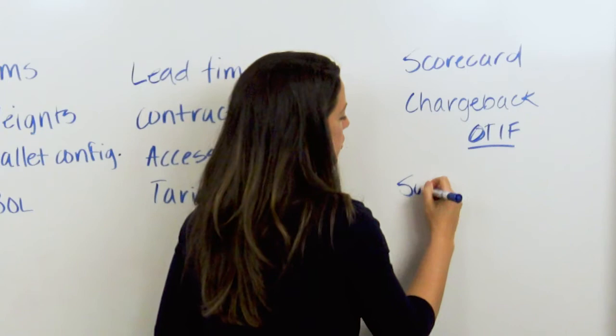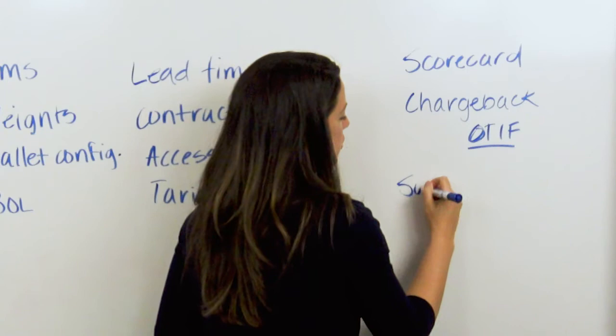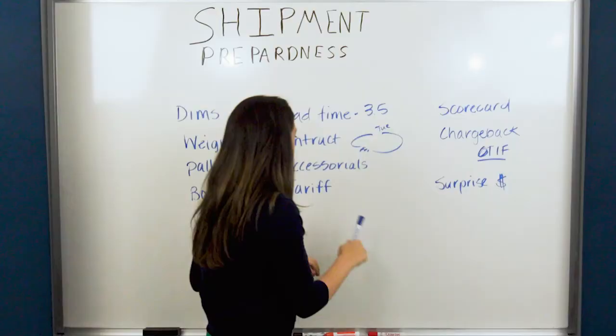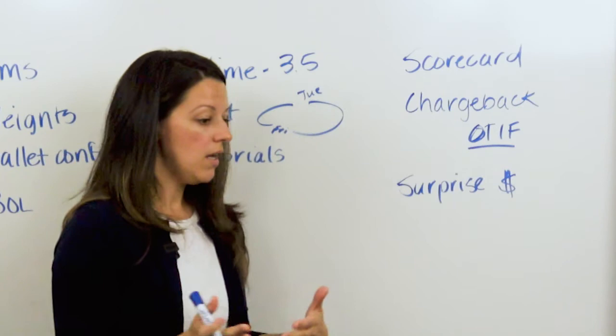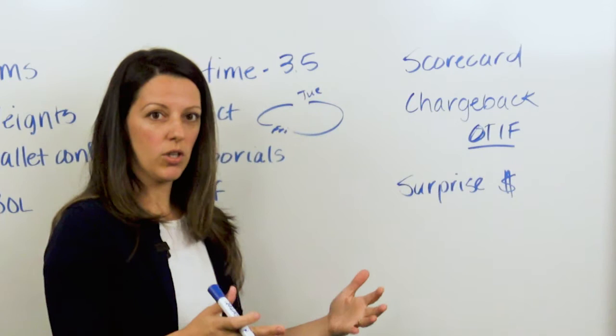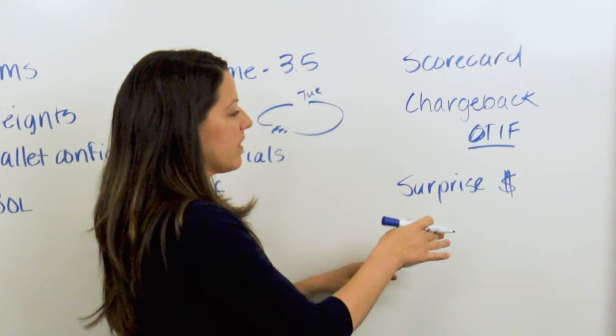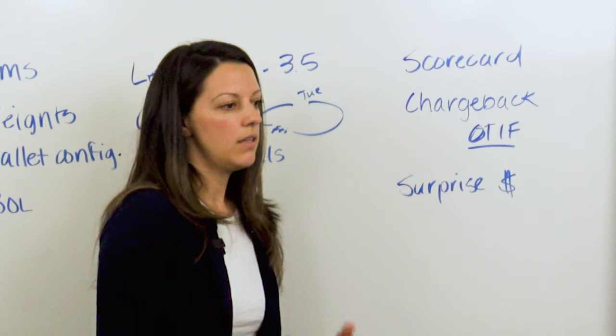And then the last thing I just wanted to bring up were surprise charges. And this goes back to, we already touched on it. Not understanding the tariffs and your accessorials up front. So if you say, you know what, I shipped it from A to B, it went LTL, it was three pallets, it moved as three pallets. Exactly what I told the carrier was going to look like, a thousand pounds, I don't know, three pallets, whatever it delivers, but they needed a lift gate.